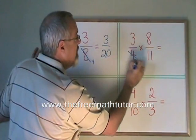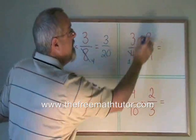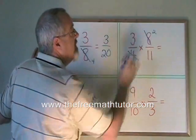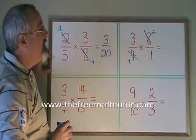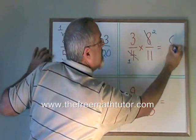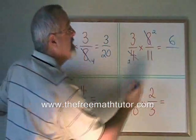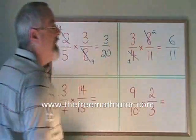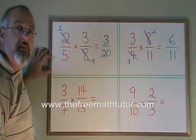4 divided by 4 is 1, and 8 divided by 4 is 2. Now I multiply. 3 times 2 is 6, and 1 times 11 is 11. I have my final answer, which cannot be reduced any further.